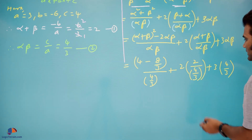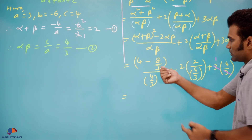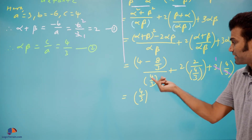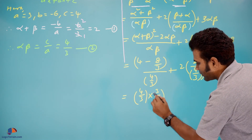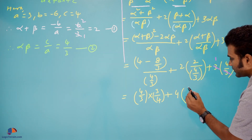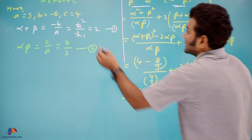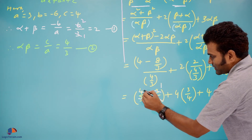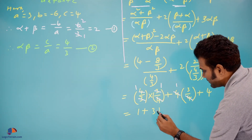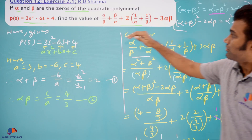Simplifying further: (4/3) ÷ (4/3) = 1. For the second term: 2 × 2 × (3/4) = 4 × 3/4 = 3. For the third term: 3 × 4/3 = 4. Adding together: 1 + 3 + 4 = 8.